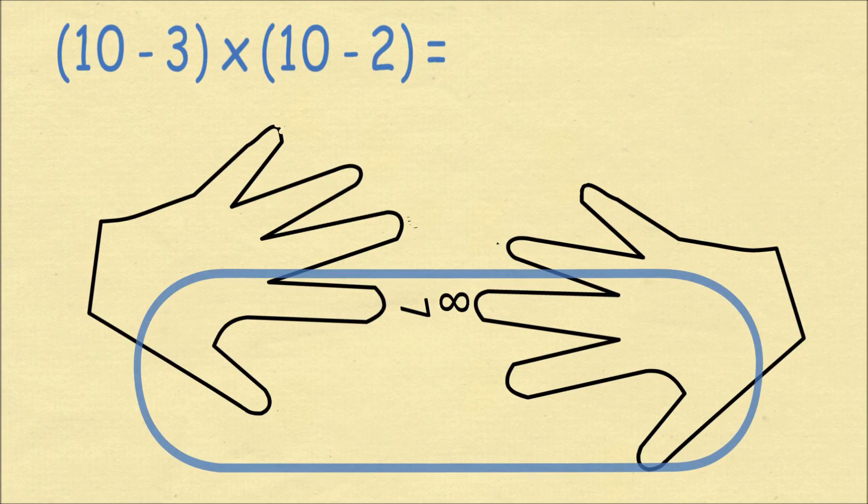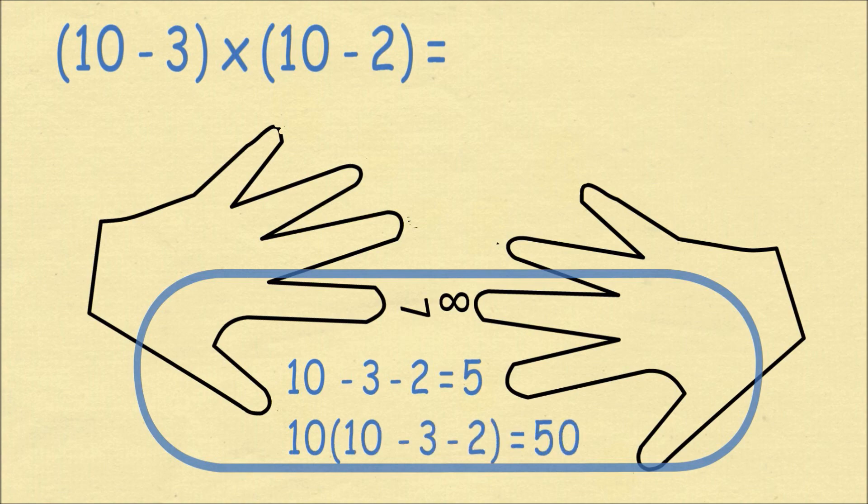We then count the number of fingers which are below the fingers that are touching. This is 10 minus 3 on the left hand, and then we subtract 2 for the fingers that are above the touching fingers on the right hand. So what we're doing here is 10 times 10 minus 3 minus 2, which is 50.